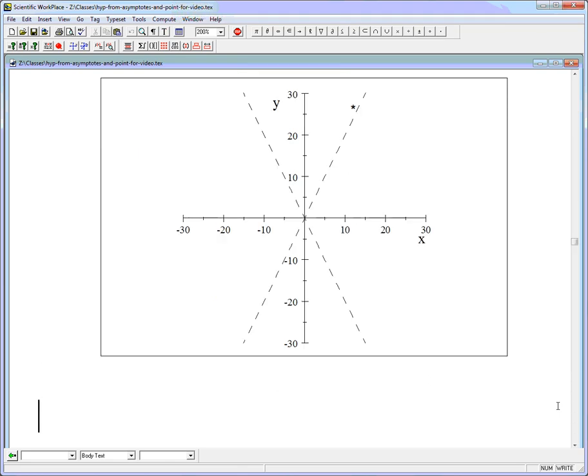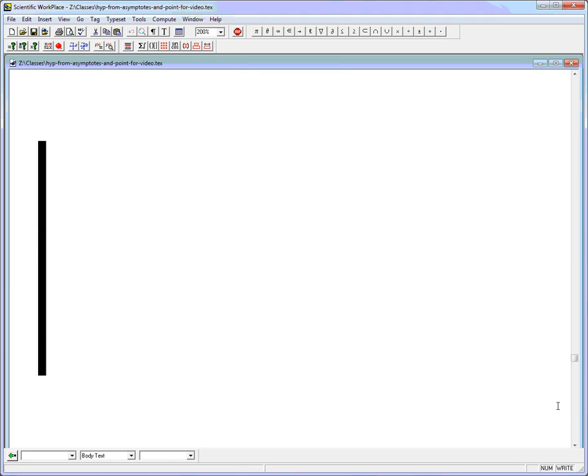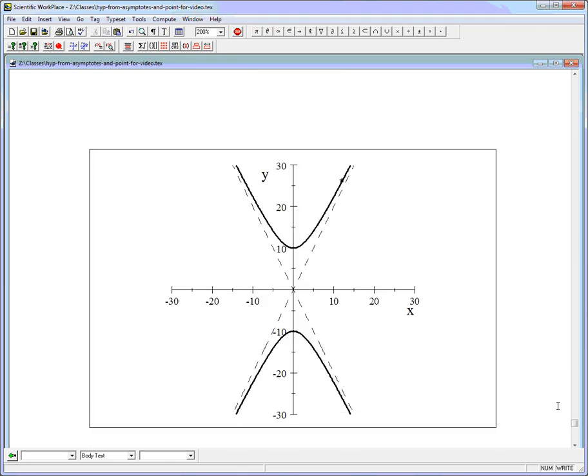And I actually have it pre-graphed down here. Let me bring it up. There we go. So here it is through 0 plus or minus 10. Still going through that starred point and with these asymptotes.